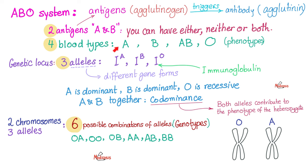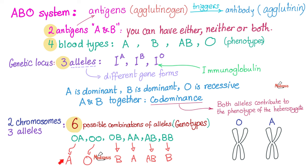For genotype and phenotype: if your genotype is BB, your phenotype is blood group B. If your genotype is AB, your phenotype is AB. If your genotype is AA, your phenotype is blood group A. If BO, B dominates over O — blood group B. If OO, blood group O. If AO, A dominates — blood group A.